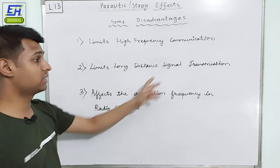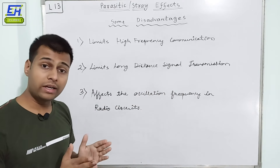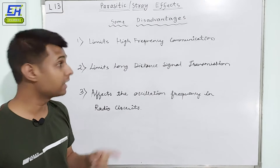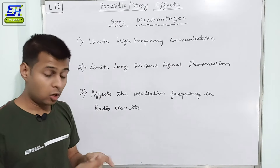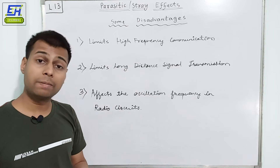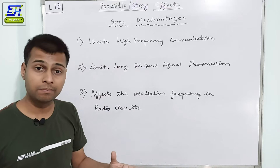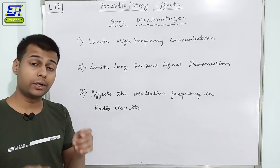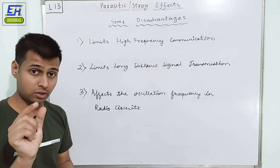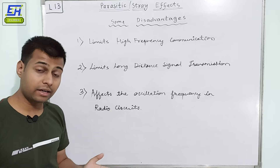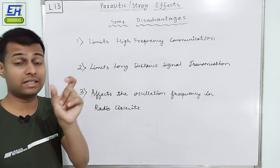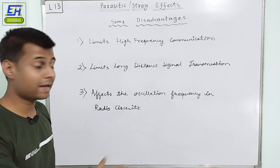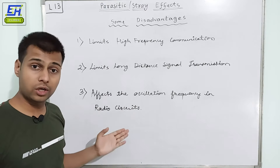The second point is that it limits long distance signal transmission. This is very much obvious because if you are increasing the length of the transmission line — increasing the length of the signal bus — you are actually increasing the parasitic effects, because the longer the length of the line, the longer will be the parasitic inductance, and greater will be the parasitic capacitance. The third point is that it affects the oscillation frequency in radio circuits. Radio circuits mostly operate at a particular radio frequency or a narrow band of radio frequencies. So if you have parasitic elements present, they will shift the frequency — even a capacitor will behave as an inductor, and an inductor will behave as a capacitor. If we do not account for these factors in our calculations, then definitely our frequency of oscillation or the tuner frequency can be affected.